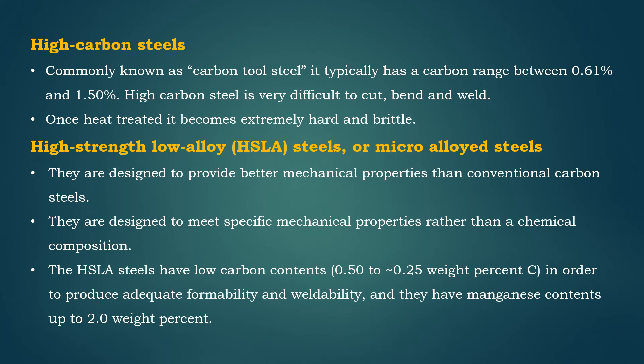High strength low alloy, or micro-alloy steels, are designed to provide better mechanical properties than conventional carbon steels, meeting specific mechanical properties rather than a chemical composition. HSLA steels have low carbon contents — 0.05% to 0.25% by weight — in order to produce adequate formability and weldability, and they have manganese contents up to 2.0% by weight.